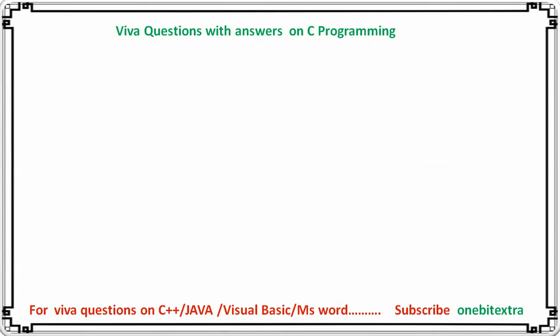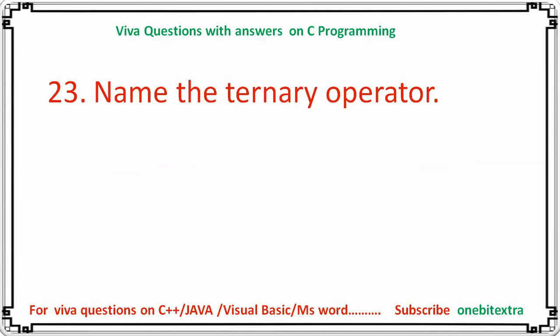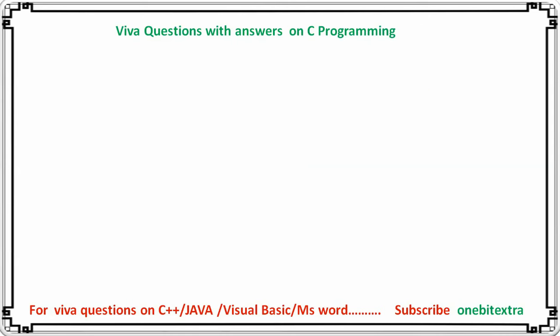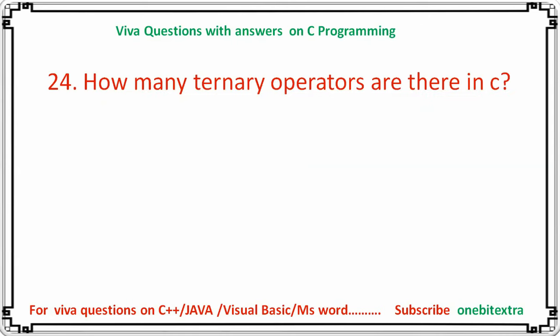Next question: name the ternary operator. The answer is the conditional operator — it is the ternary operator in C. There is only one ternary operator in C, that is the conditional operator.